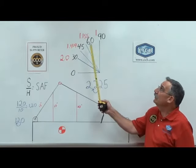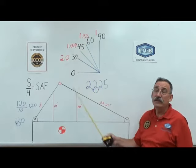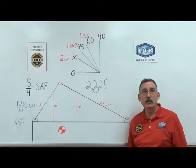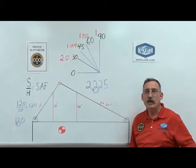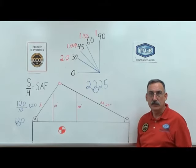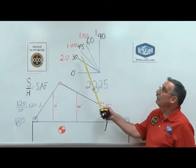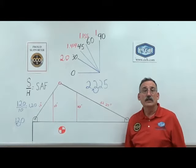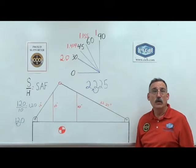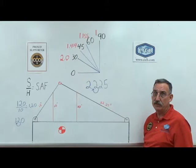However, as we come down at 60 degrees, our sling to load angle factor is 1.155, or about 15% additional load on that sling. At a 45 degree angle, our sling to load angle factor is 1.414, or about 40% additional stress.